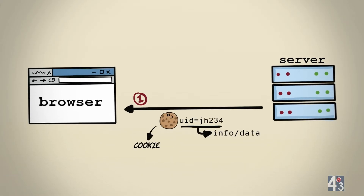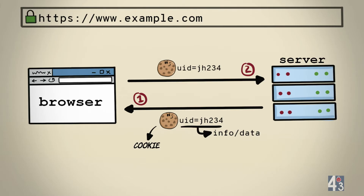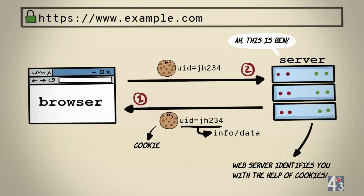Cookies are small pieces of information or data that a web server sends to your browser so it can be stored on your computer's hard disk. The next time you make a request on the same website, your browser sends that cookie along with the request so that the website can identify you.